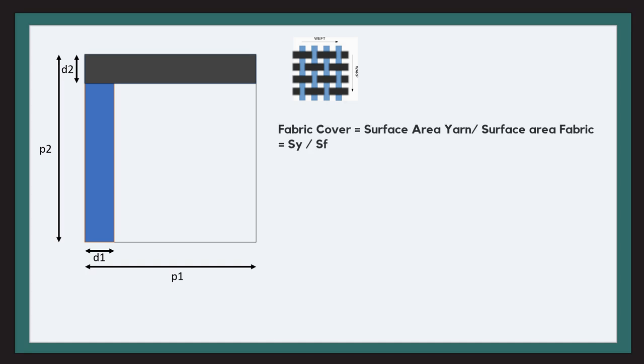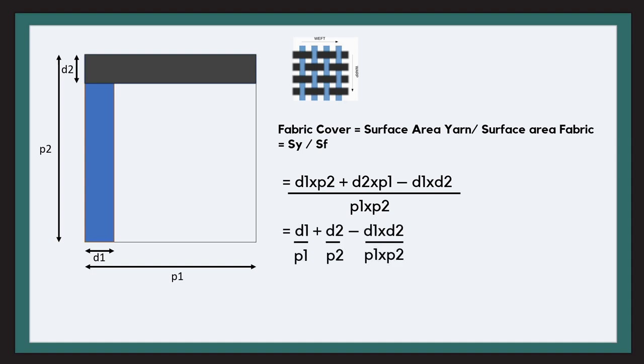Now we have fabric cover, that is the ratio of the surface area occupied by the yarns to the surface area occupied by the fabric. Let us look at the numerator first. The surface area covered by both warp yarn and the weft yarn equals D1 into P2 that forms a rectangle here plus D2 into P1 that forms a rectangle here. And subtracting D1 into D2. Why are we subtracting this? Because of this overlapping area. We have taken it two times, now we have to subtract it once.